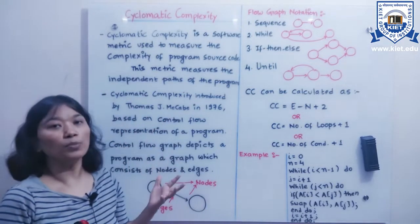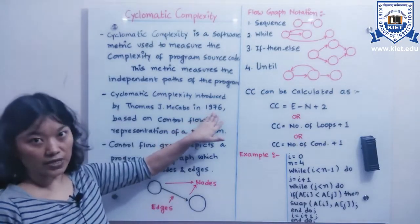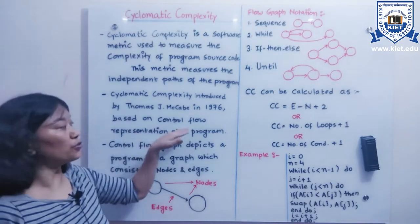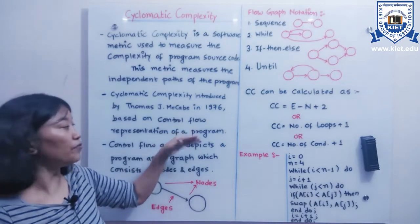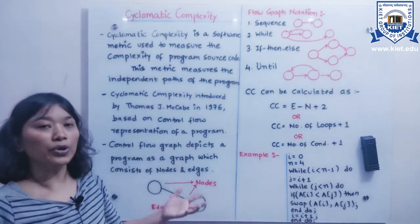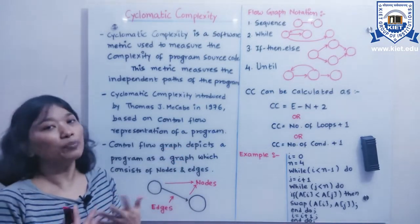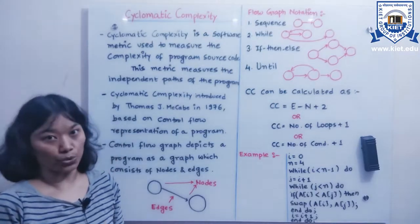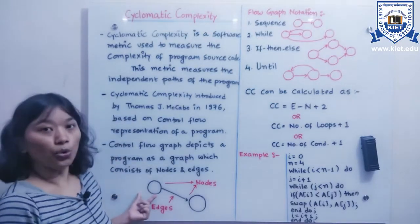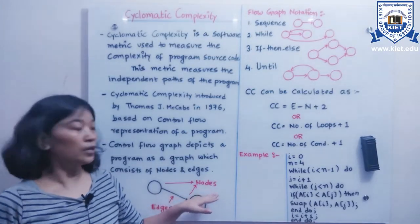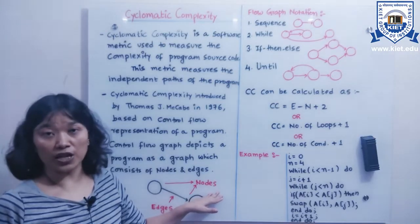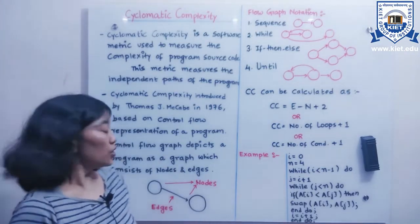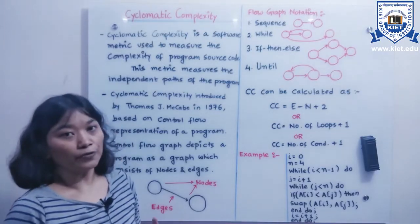Cyclomatic complexity was introduced by Thomas J. McCabe in the year 1976. It is totally based on the control flow representation of a program. A control flow graph depicts a program as a graph consisting of two important things: edges and nodes. Nodes represent tasks, and edges represent the connectivity between those tasks.